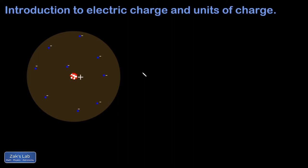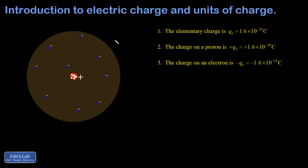Electrons and protons have exactly the same magnitude of charge, called the elementary charge — protons have plus one elementary charge and electrons have minus one elementary charge. In a solid material like the plastic or glass in our electrostatics experiment, the nuclei are pretty much locked in place, but electrons are relatively easy to rip off of atoms and move around. When we rub two dissimilar materials together, one of those materials is nearly certain to have a greater affinity for electrons than the other.